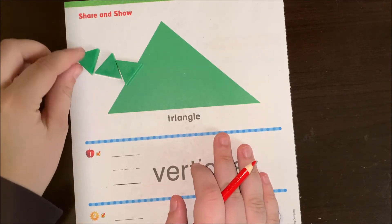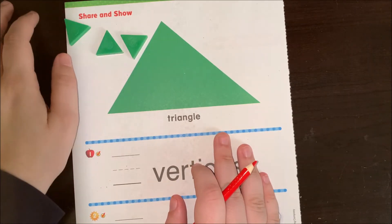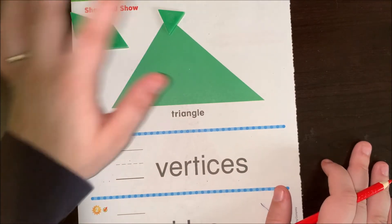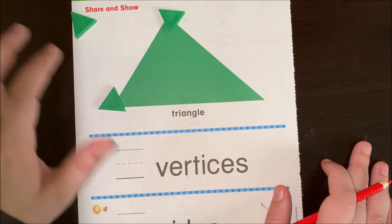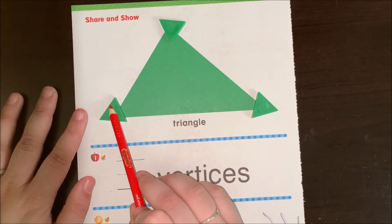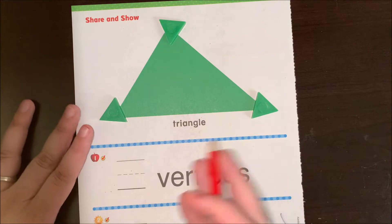Alrighty. I'm going to use these shapes as counters. You can use the shapes that I gave you, too, actually. Alright, I'm going to put a counter on every corner or vertex. Alright, let's see. How many vertices do I have? One, two, three.